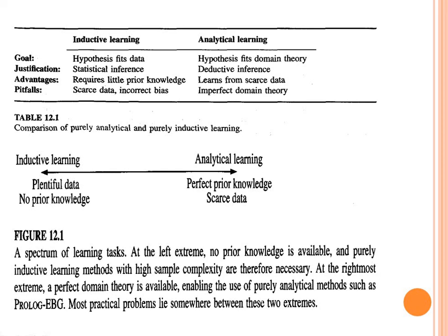The differences between inductive and analytical learning are shown in a pictorial model. The goal in both is to find a hypothesis — in inductive learning it fits the data, in analytical learning it fits the domain data. Justification: inductive uses statistical methods; analytical uses deductive inference and logical justification. Inductive learning's main advantage is it doesn't require prior knowledge. Analytical learning's advantage is it can learn from fewer samples. Inductive learning's main disadvantage is bias from insufficient data; analytical learning's disadvantage is bias from an imperfect domain theory.